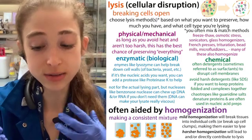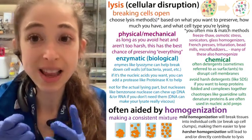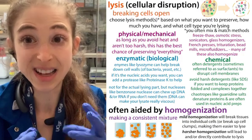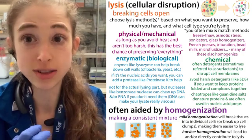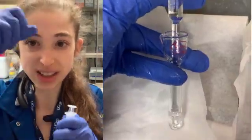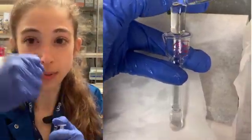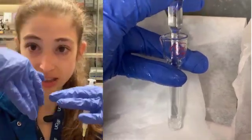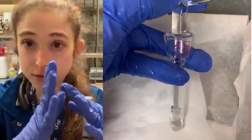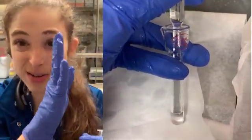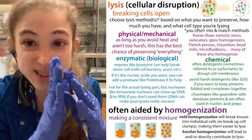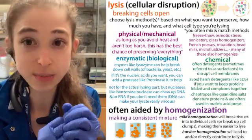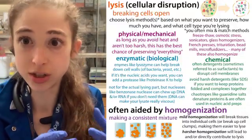Mechanical disruption includes things like trituration, and there are also things called glass homogenizers — like a Dounce homogenizer — where you go up and down in this glass and it pushes the liquid. You get shear force again because you're pushing down and the liquid is going up, squeezing in between the two glass pieces.